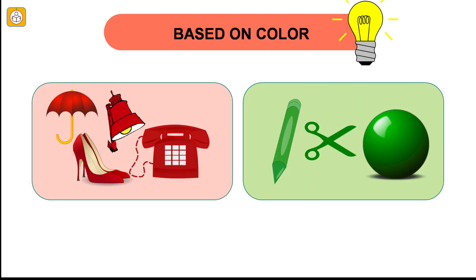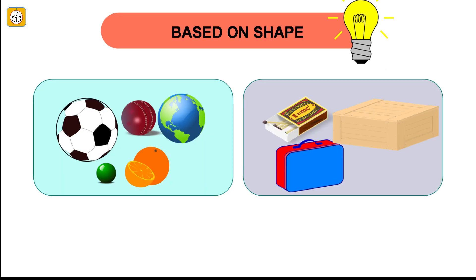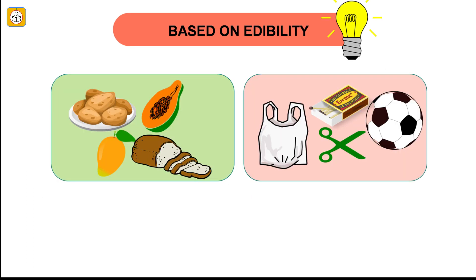The picture shows sorting of objects based on color. This picture shows sorting of objects based on shape. The objects have been placed into two groups based on their shape, i.e. spherical and cuboidal. The picture shows sorting of objects based on edibility, i.e. eatable and non-eatable objects, regarding which we have already studied in chapter 1.